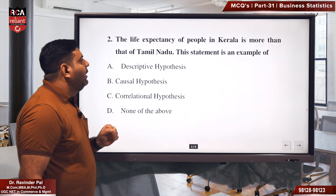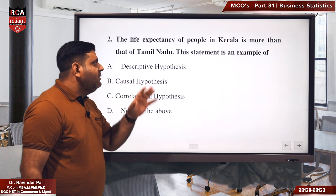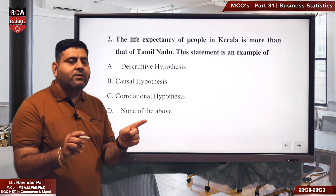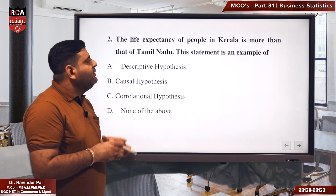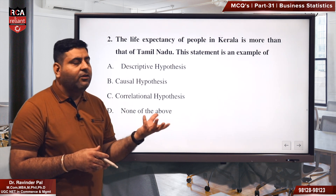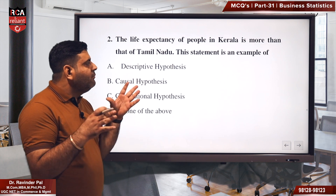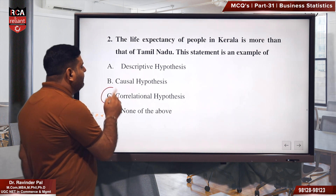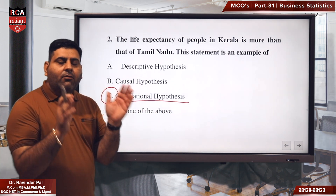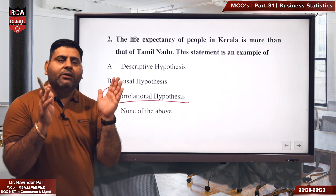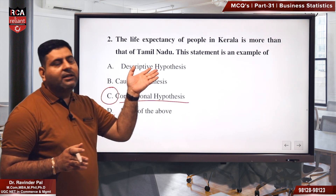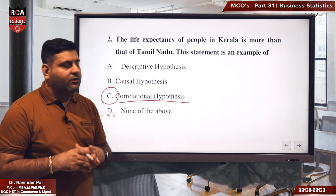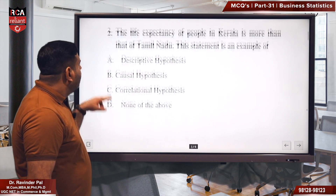Come to the next one. The life expectancy of the people in Kerala is more than that of Tamil Nadu. When we are comparing any one variable between two states — here we are comparing life expectancy between Kerala and Tamil Nadu — this is a correlation hypothesis. When we are going to compare between two variables, this is what we call a correlation hypothesis.